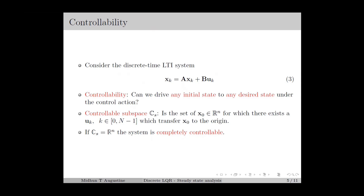Similar to the continuous time case, we can also define controllability using the concept of the controllable subspace, which we denote as the set CS. The set CS consists of the initial states x0 in R^n for which there exists a control input sequence uk over the discrete interval from 0 to N-1 which transfers x0 to the origin. Therefore, the set CS contains the set of initial states which can be transferred to the origin in a finite time using a finite control action. The system is said to be completely controllable if the set CS is equal to R^n.